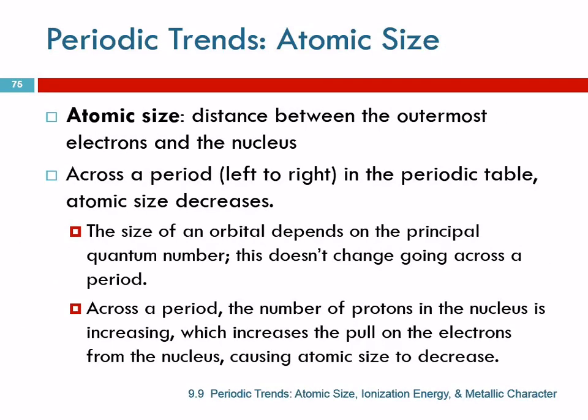The trend going across is counterintuitive. You might think that as you go from potassium to calcium to scandium — going across from left to right — the atoms would get bigger, because you're adding electrons. It actually gets smaller. As we add electrons across a period, we're adding them to the same level, the same floor, so their average distance from the nucleus is about the same. But we're also adding protons to the nucleus, so the charge on the nucleus is increasing.